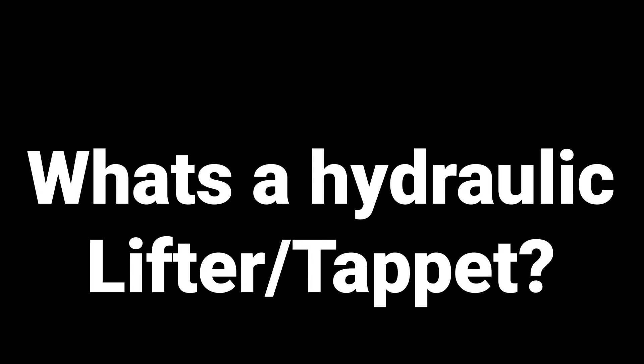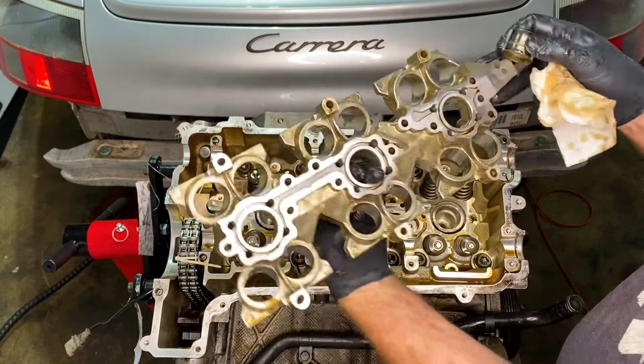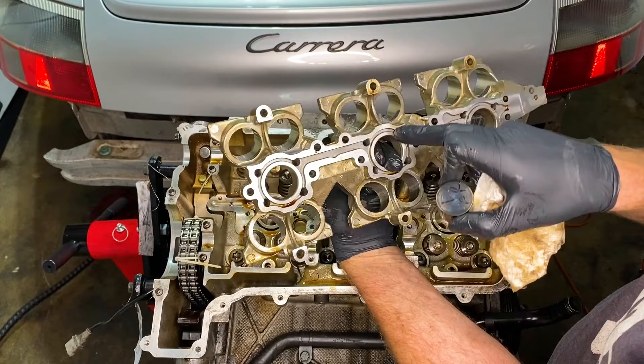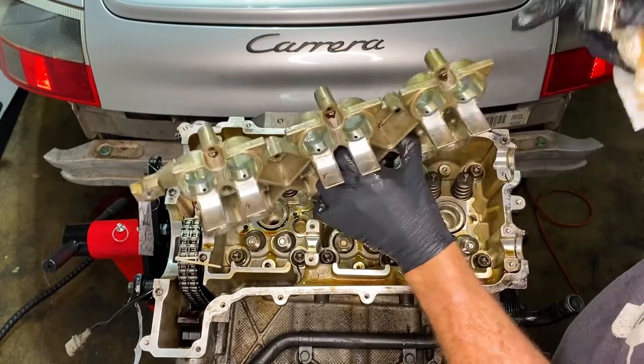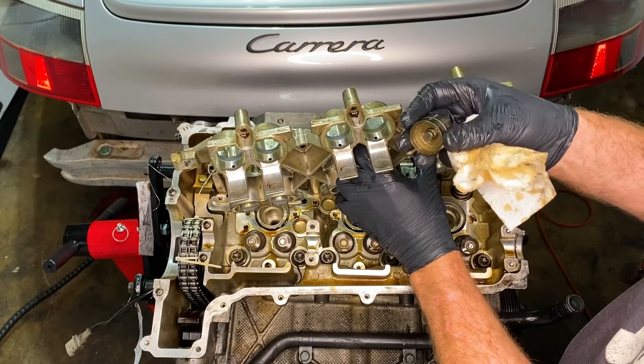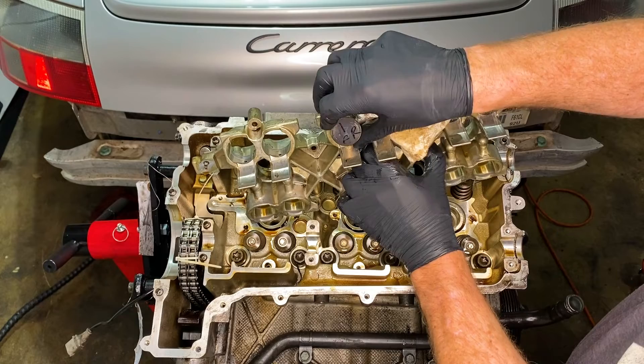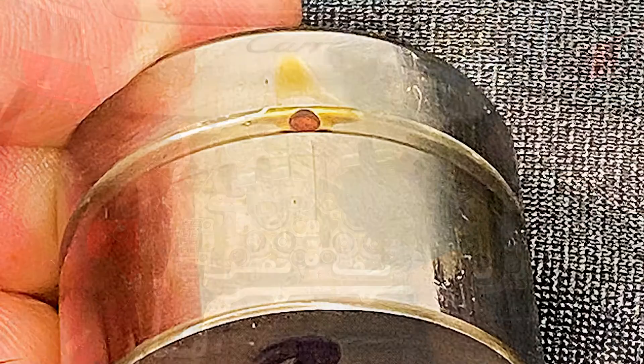So what is a hydraulic lifter or a tappet? I've always wondered about that. If you look on the back of the cage here you can see that it has this channel for getting oil to each of those hydraulic lifters and there's the hydraulic lifter itself. There's a little hole that gets oil from those channels into the lifter itself. You can see it there.